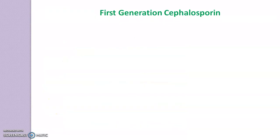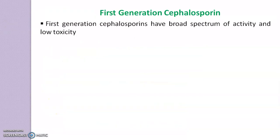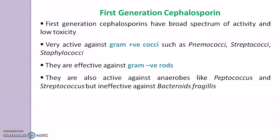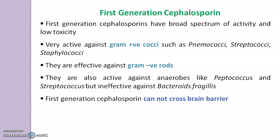1st generation cephalosporins have a broad spectrum of activity and low toxicity. They are very active against gram-positive cocci such as pneumococci, streptococci, and staphylococci. They are effective against gram-negative rods also. They are also active against anaerobes like peptococci but ineffective against Bacteroides fragilis. 1st generation cephalosporins cannot cross the blood-brain barrier.